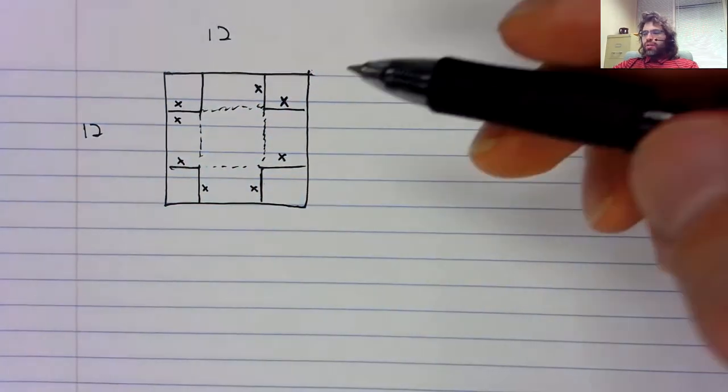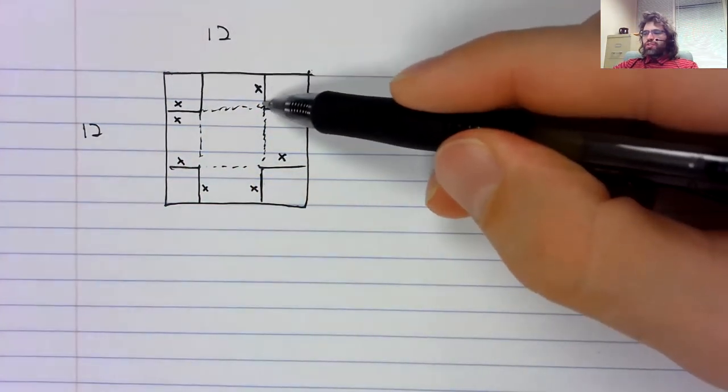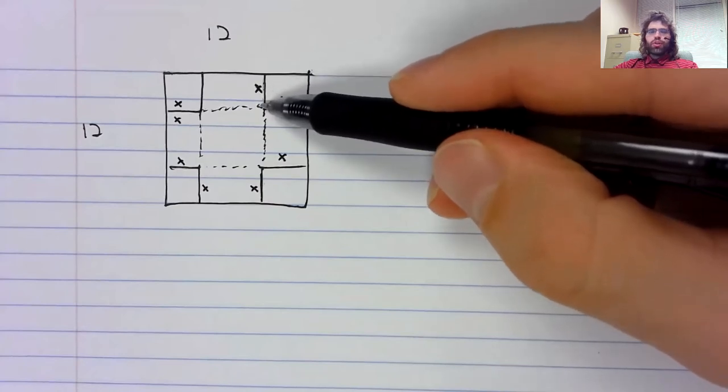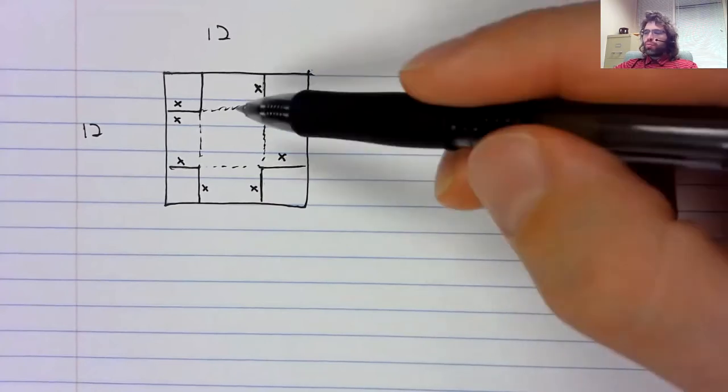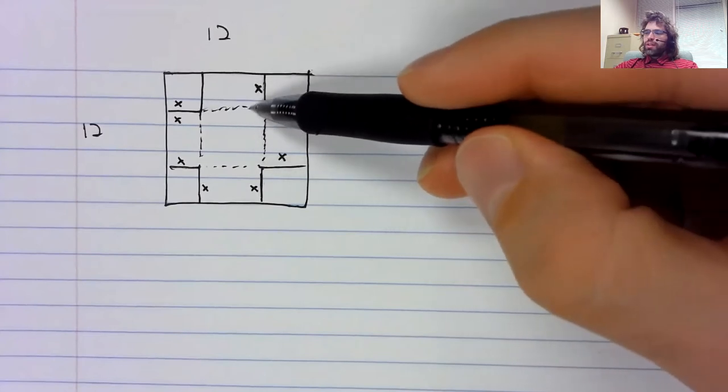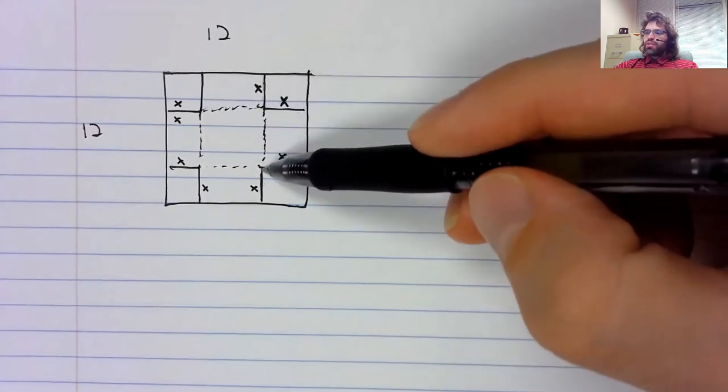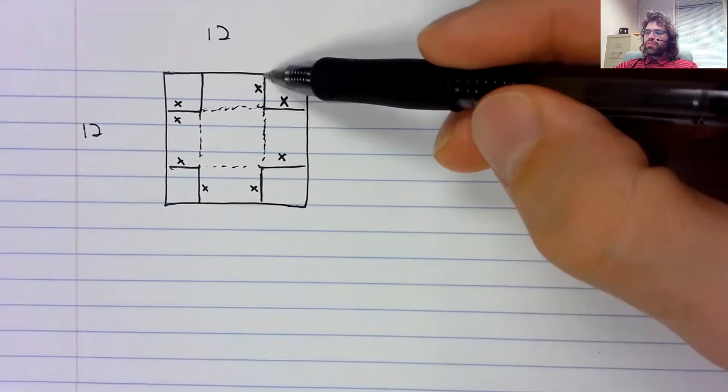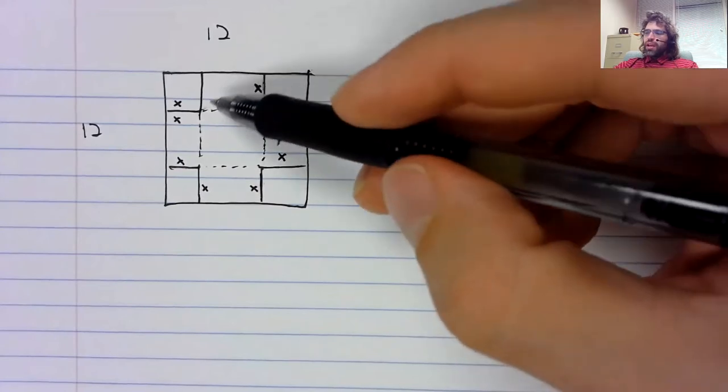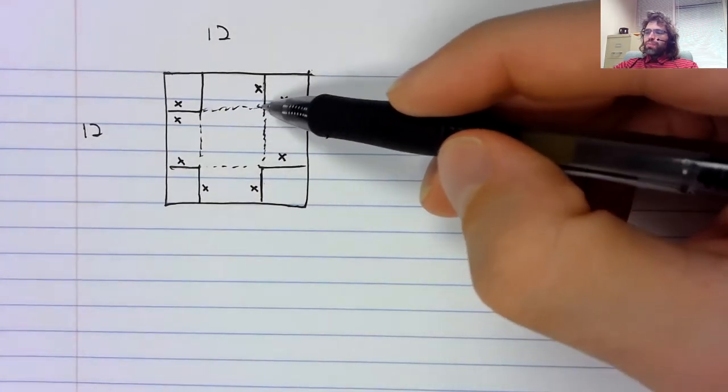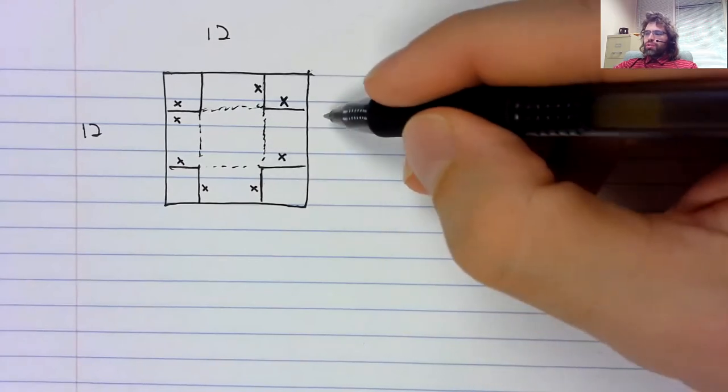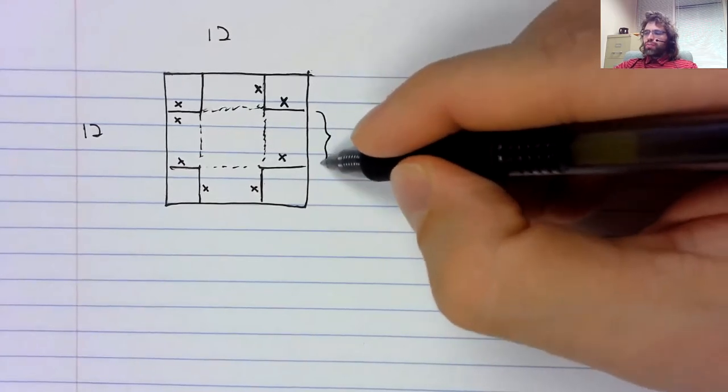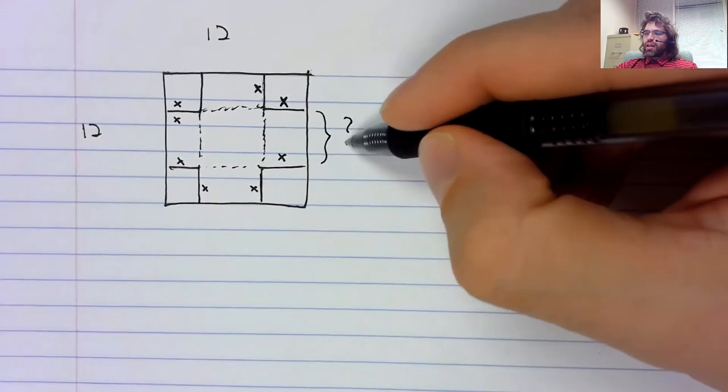And this is going to appear in the formula for the volume. The volume is going to be this times this times this. And this is a square. So we only need to figure out one of these sides.